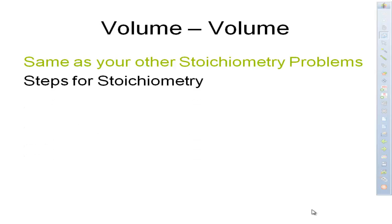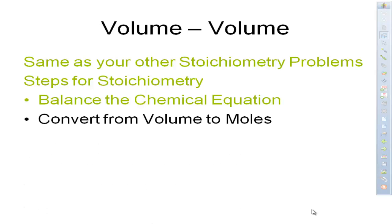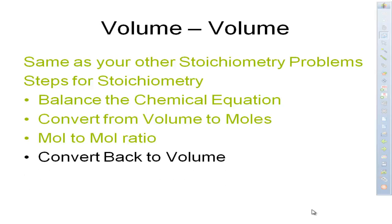The steps for volume-to-volume stoichiometry are balance the chemical equation, just like always. Number two, convert from volume to moles. Next, do your mole-to-mole ratio. Again, remember that comes from the balanced chemical equation. And then the last thing, convert back to volume.